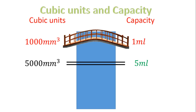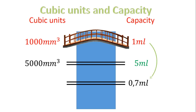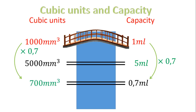Let's look at another example. Zero comma seven milliliters — we want to know how many cubic units that is. What do we do to go from one milliliter to zero comma seven milliliters? We times it by zero comma seven. On the left-hand side, I take one thousand, times it by zero comma seven, and that gives me seven hundred millimeters cubed. In other words, zero comma seven milliliters equals seven hundred millimeters cubed.